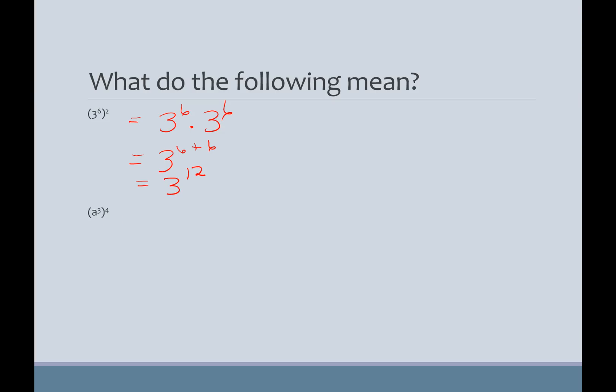A cubed to the fourth power is A cubed multiplied by itself four times. Right? So, there it is. And then all I do again is add my exponents, which we just learned. So, 3 plus 3 plus 3 plus 3 is 12. A to the twelfth.